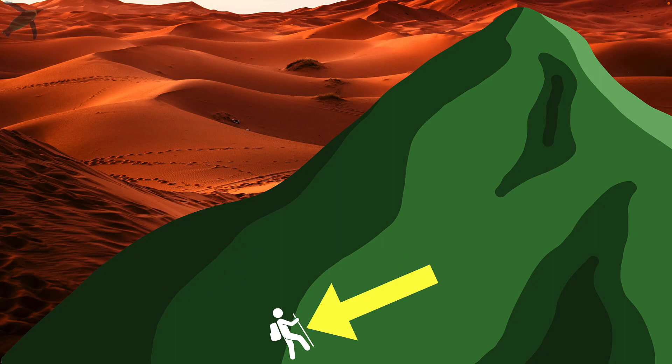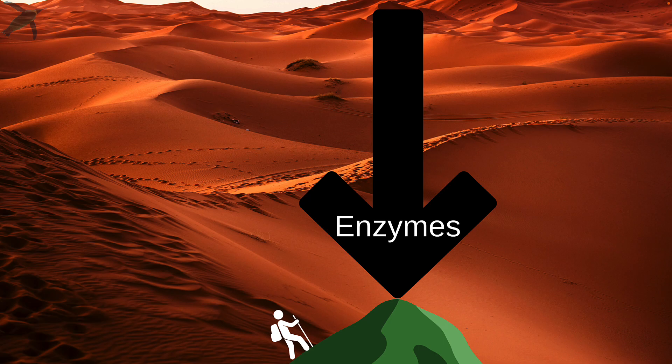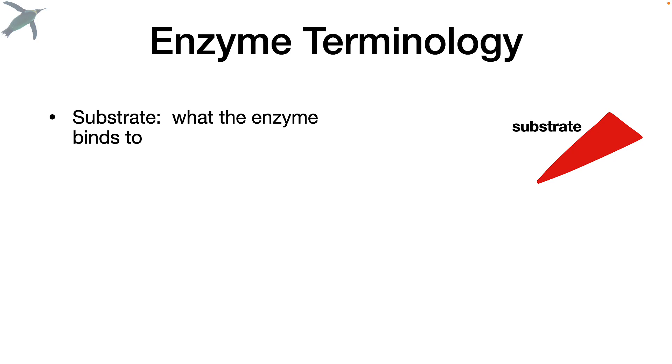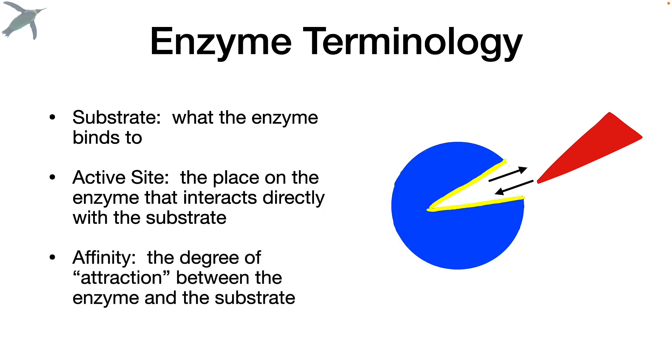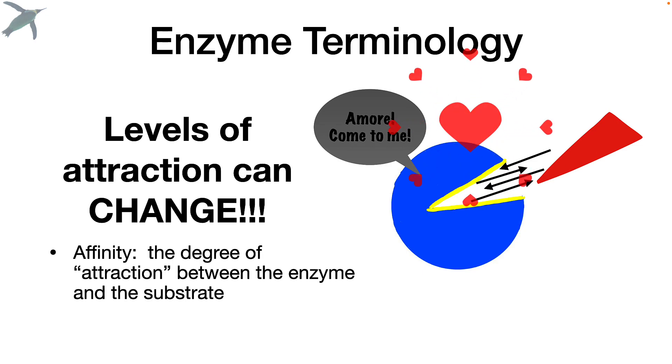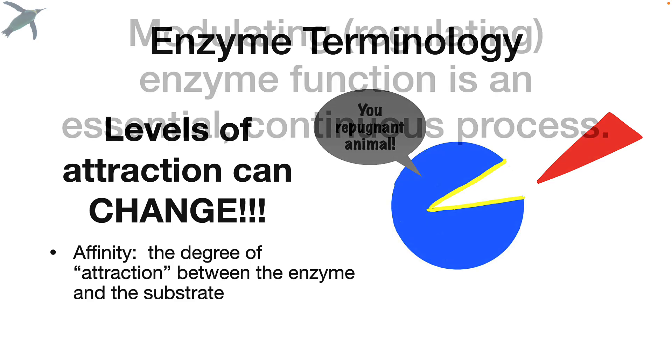So an analogy would be if that's you and you have to climb this huge mountain, if an enzyme is present, it makes the mountain smaller. So basically, this amount of energy is what you would save to get to that mountaintop. Some terminology here. The substrate is what the enzyme binds to. The active site is the place on the enzyme that interacts directly with the substrate. And this is the tricky one. Affinity is the degree of what I'm going to call attraction between the enzyme and the substrate. And the thing is, levels of attraction can change. It is not a fixed value. My students struggle with this a lot. But really, it's a lot like people.